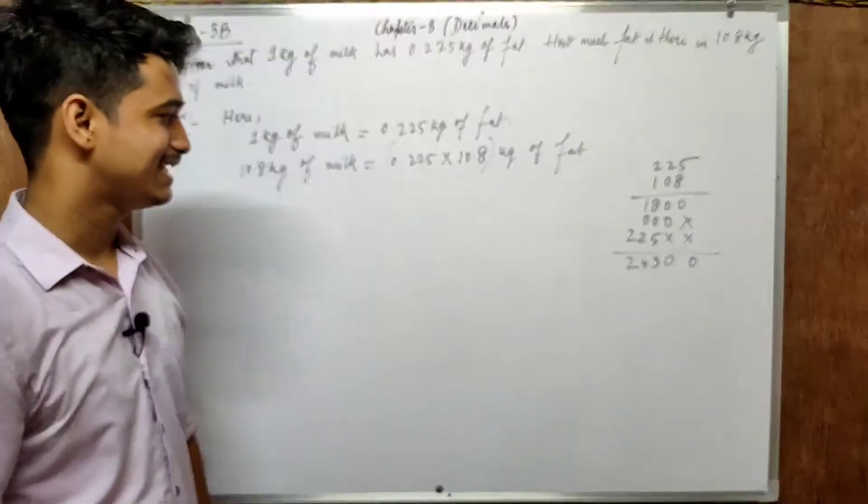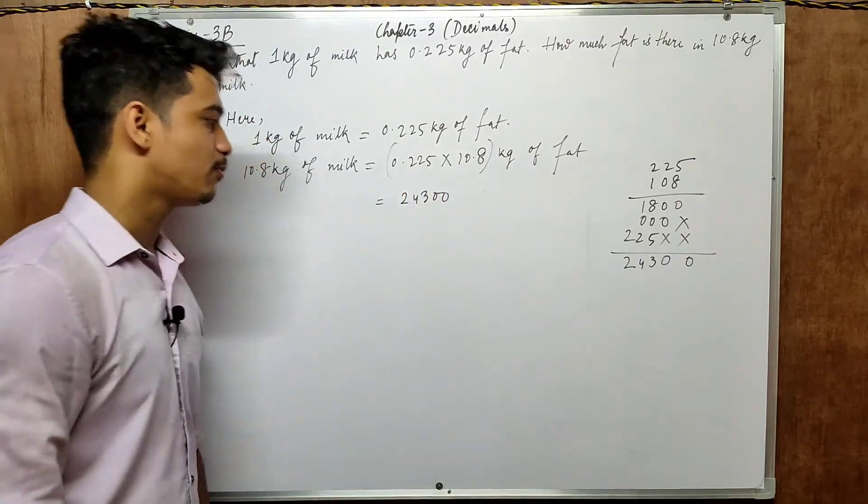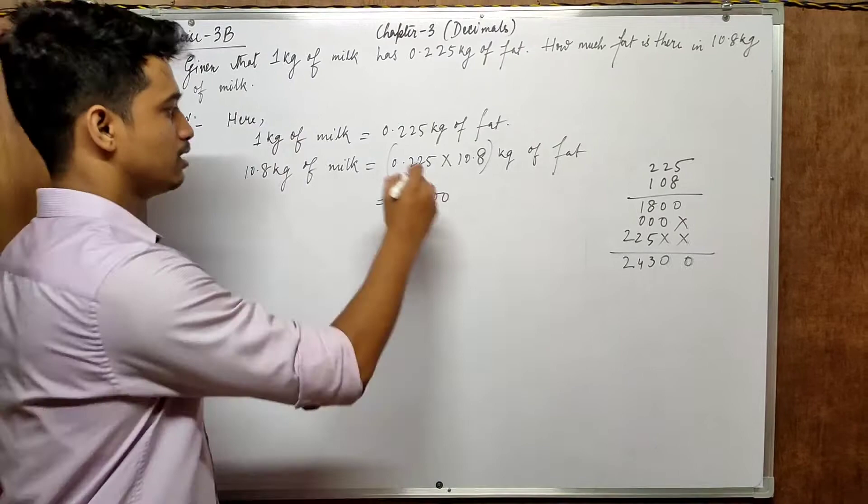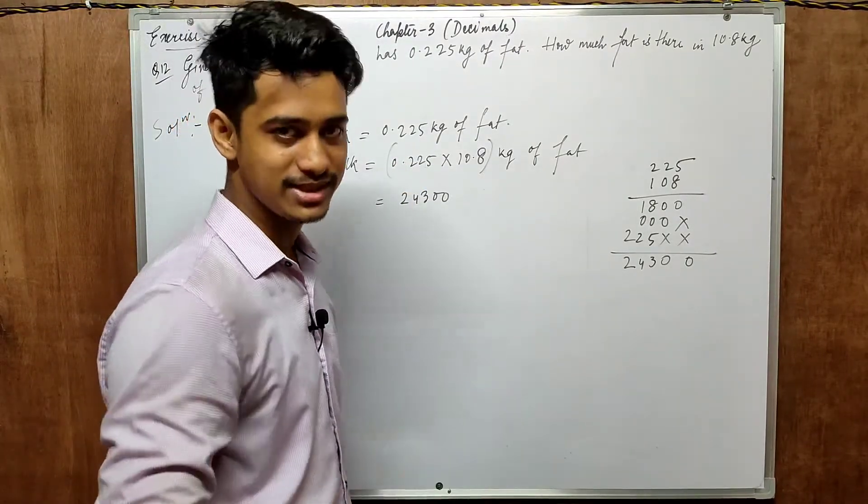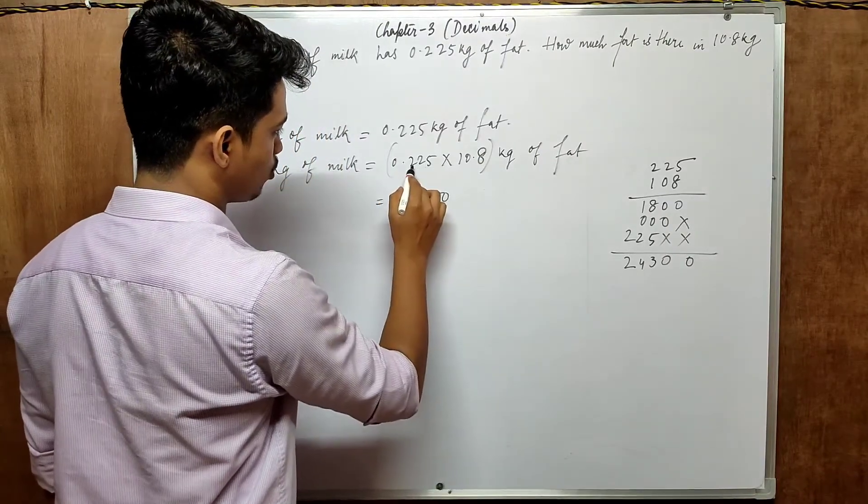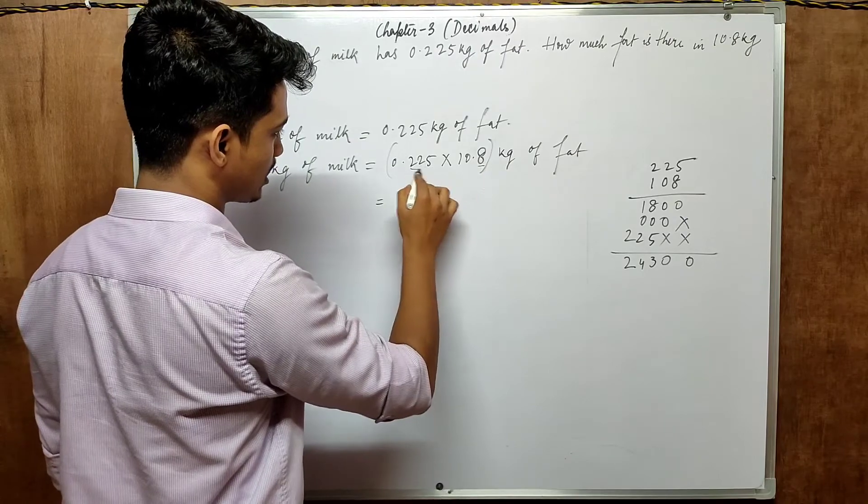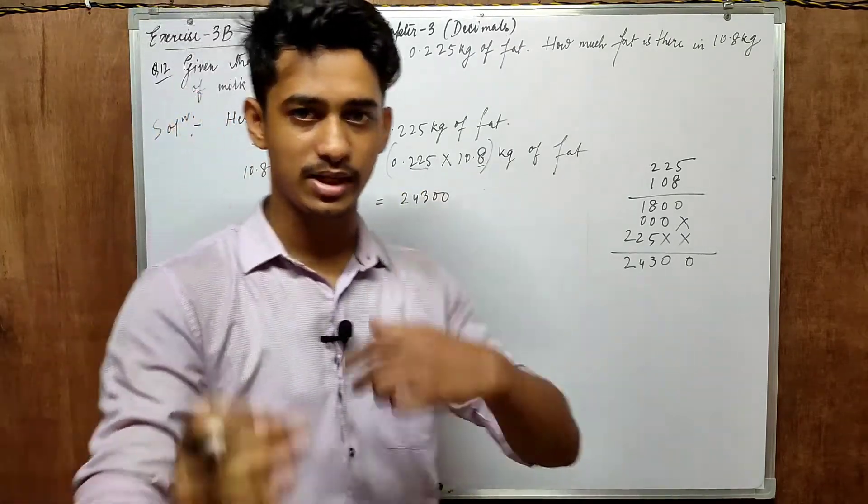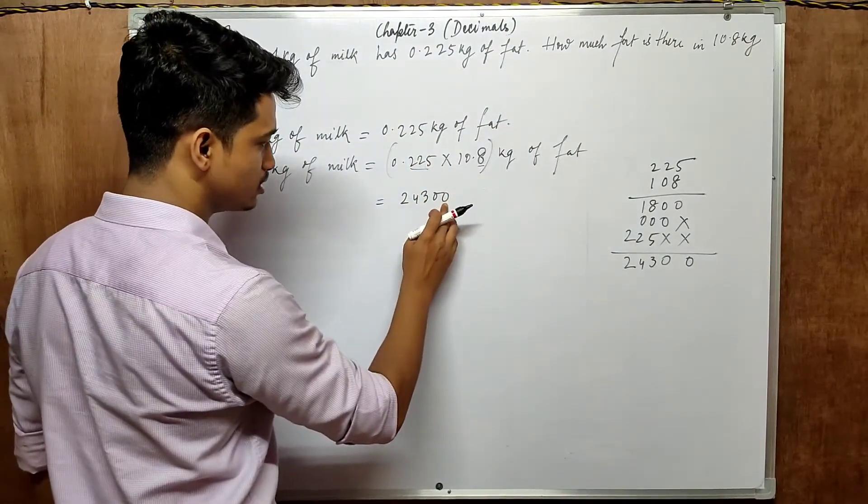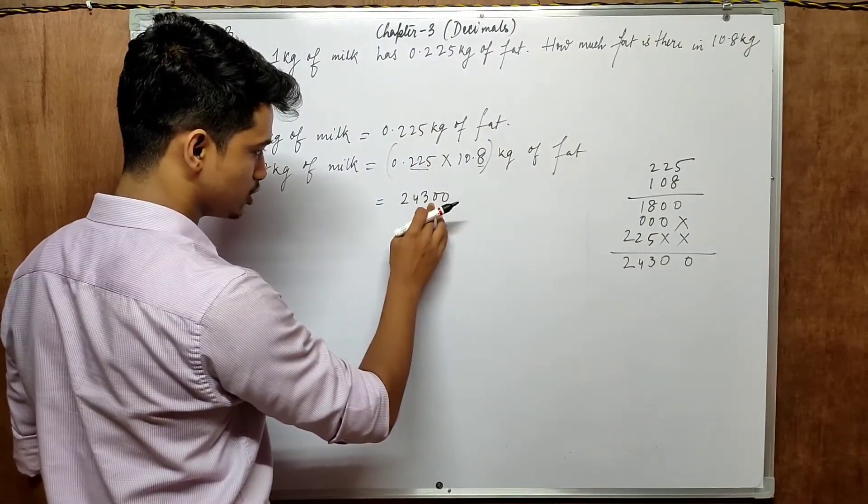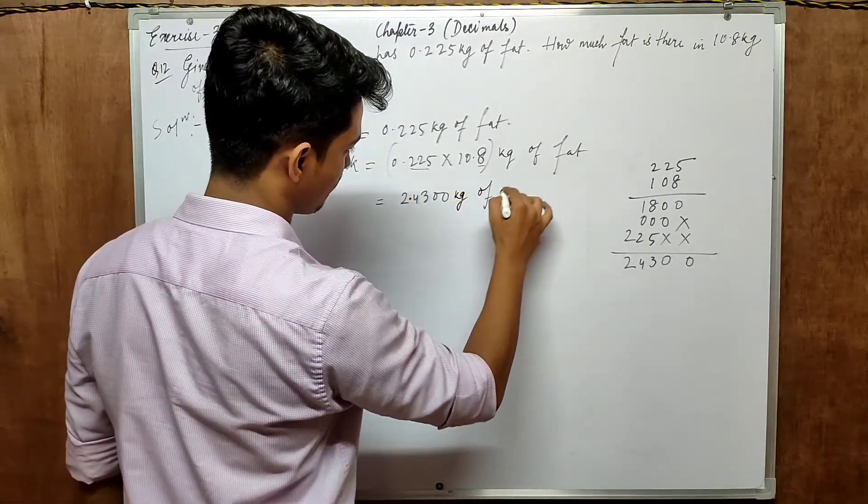2, 4, 3, double 0. And how many points will be there? After point, how many digits are there? 1, 2, 3. How many? After point, how many digits are there? After point 1, 2, 3 and after point only one digit. So collectively, it will become four digits. Count from the right, 0. That is 1, 2, 3, 4, put one point. Kg of fat.